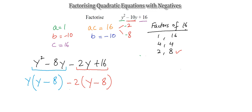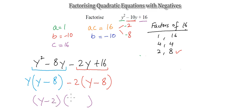The two brackets share y minus 8, confirming correctness. Taking the outsiders and insiders, we get (y minus 2)(y minus 8). If you expand these two brackets you get exactly y squared minus 10y plus 16. Very nice and easy — just make sure you're carefully considering your signs.